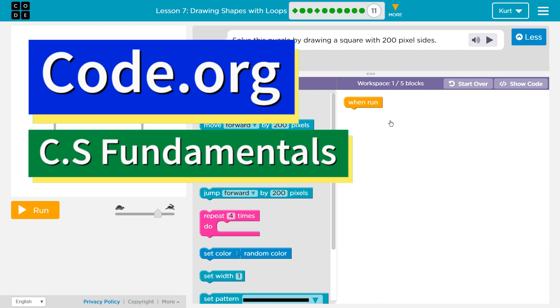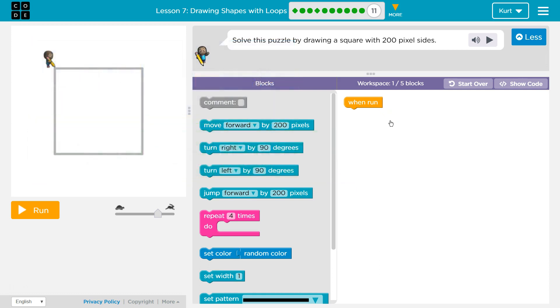This is Code.org. I'm currently working on their CS Fundamentals course. Right now I'm on Course D, Lesson 7, Drawing Shapes with Loops, Part 11. Solve this puzzle by drawing a square with 200 pixel sides.